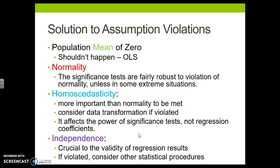If we violate independence — meaning the error term is somehow related to your Y variable — that is a huge problem. You are done with regression; you cannot use that variable. Period. There are no other options. You can try transformation, but it doesn't usually work.